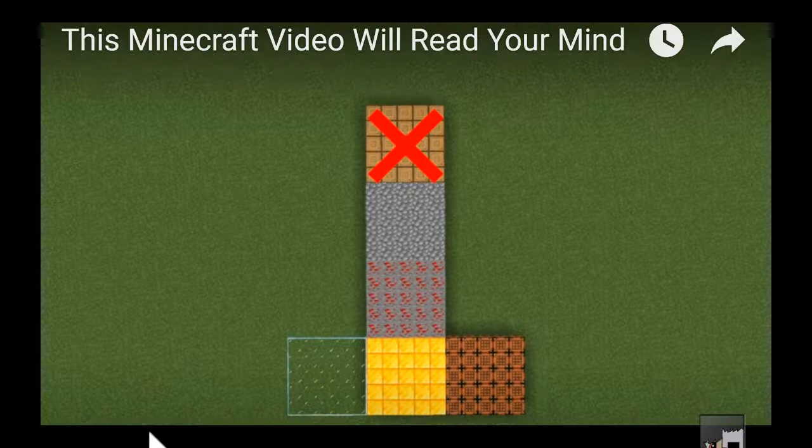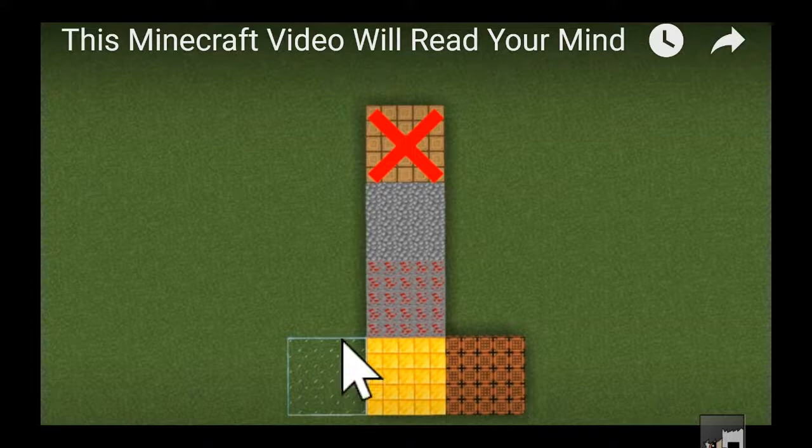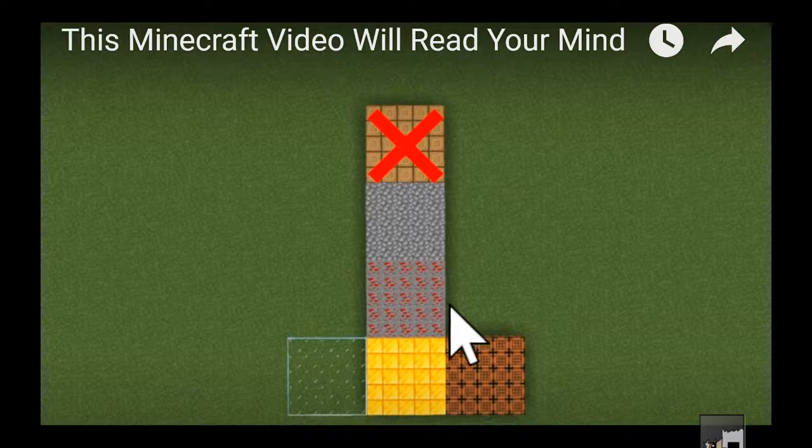So again, same thing, cannot be cobblestone because then the log will be separated. It cannot be redstone since the cobblestone and log will be separated. It cannot be gold because the crafting table and glass will be separated. And so it's between log, glass, and crafting tables.